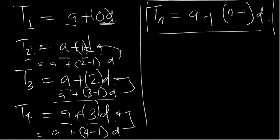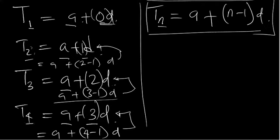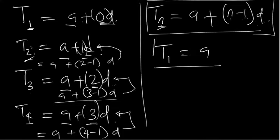To verify: if n equals 4, then 4 minus 1 is 3, giving 3D — which matches. If n equals 3, then 3 minus 1 is 2, giving 2D. If n equals 2, then 2 minus 1 is 1, giving 1D. If n equals 1, then 1 minus 1 is 0, and 0 times D is 0 — so the first term is always equal to A. That is the end of this video. Thank you for watching and have a nice day.